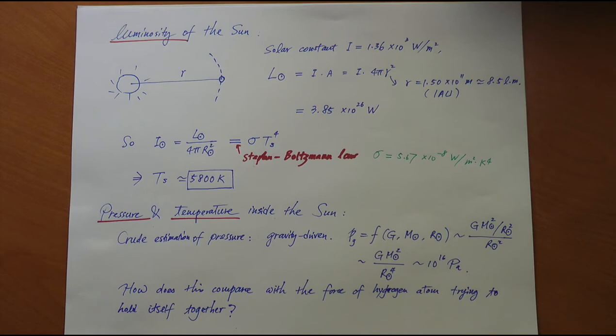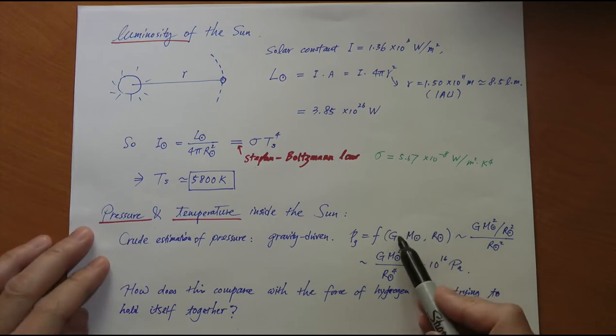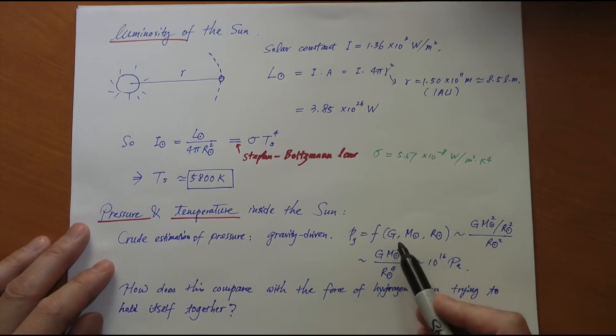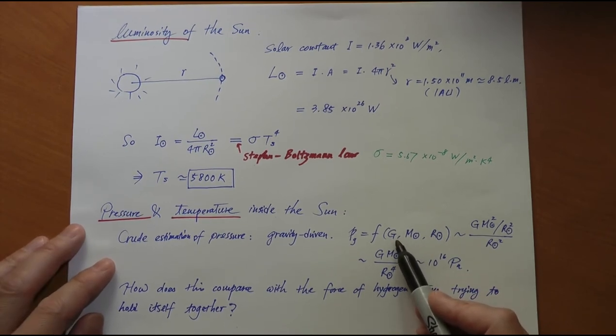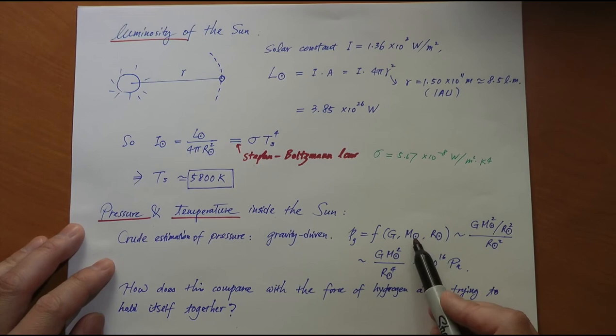We can do a crude estimation of pressure. You know the pressure near the center of the sun must be gravity induced. It's the weight, the mass that's attracting each other, causing this enormous pressure. Therefore, it must depend on G, the universal gravitational constant, as any gravitational phenomenon would do.